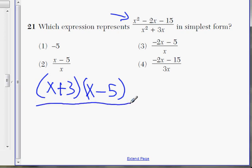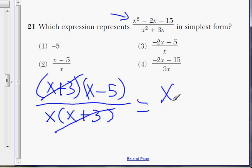On the bottom, we can also factor x squared plus 3x, and they both have an x in common, so you can factor out an x, and what's left inside is x plus 3. Now let's take a look and see what you can cancel out. We have x plus 3 on top, and x plus 3 on the bottom, that cancels, and you're left with just x minus 5 divided by x, and that is choice 2.